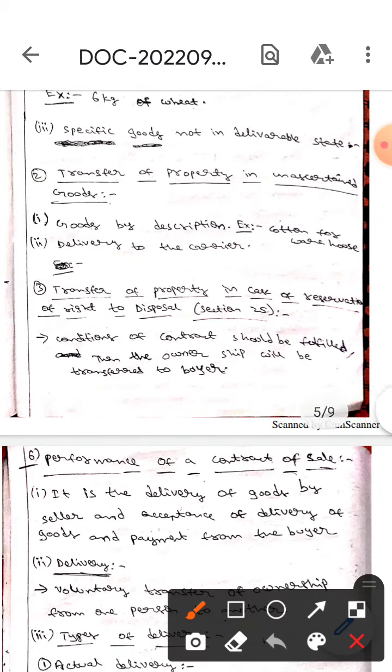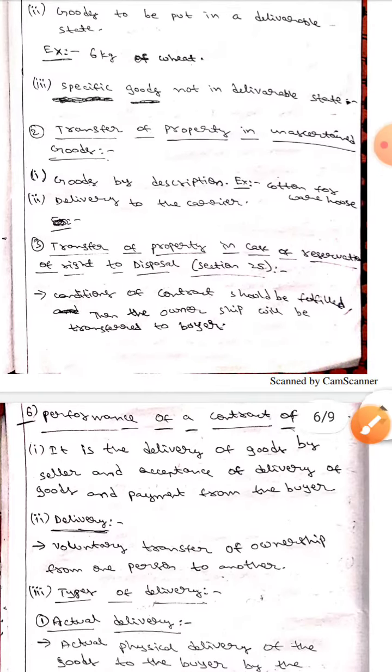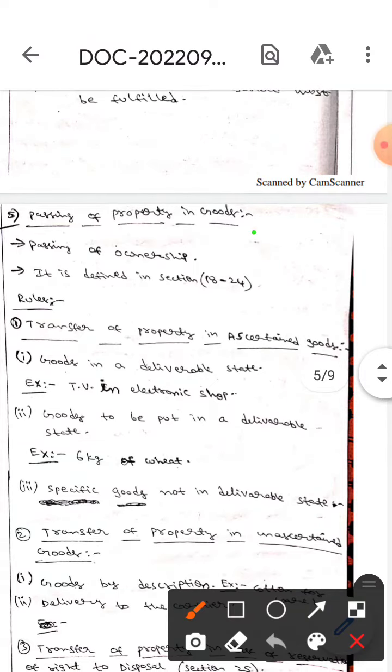Here conditions of contract should be fulfilled then the ownership will be transferred to the buyer. This is all about the passing of property in goods. I hope I understand guys. Thank you.